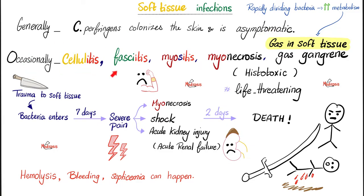Sometimes, however, they can cause cellulitis, fasciitis, myositis, myonecrosis, and gas gangrene, with lots of gas inside soft tissue. Where does this gas come from? The rapidly dividing bacteria in your tissue ramp up their metabolism, producing gas. The classic story: trauma to soft tissue, Clostridium perfringens enters your body — seven days later you'll start feeling severe pain, followed by myonecrosis, shock, and acute kidney injury. Two days after that, you might die. Hemolysis, bleeding, bacteremia, and septicemia are not uncommon.